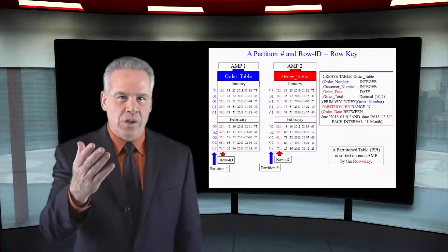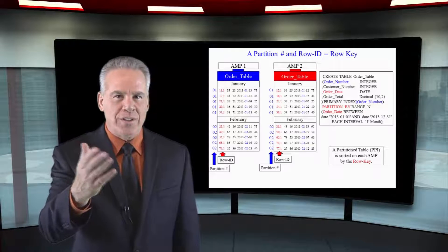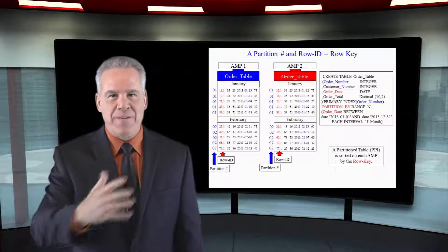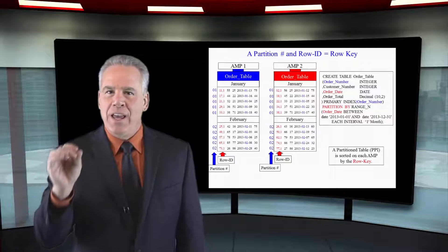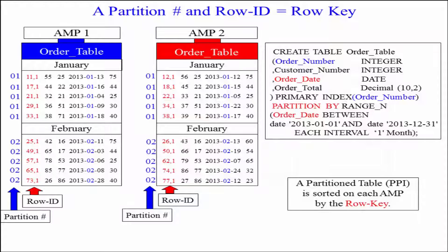Look at the rows from January and February. The only difference between those is the month of those order dates. We've got partition one and partition two. You can see all the ones and all the twos — that stands for the January and the February partition.